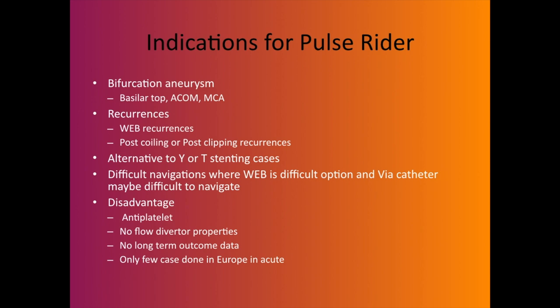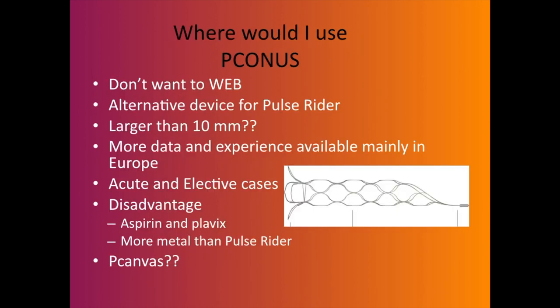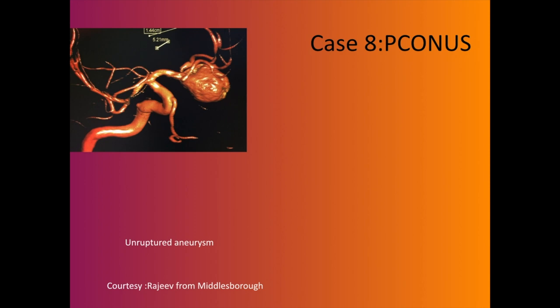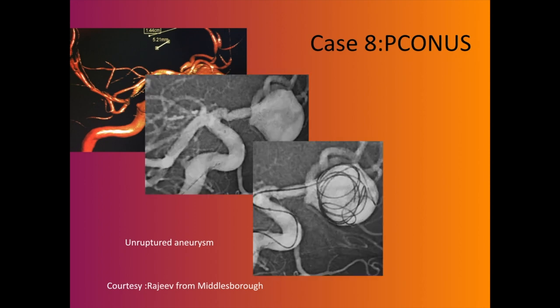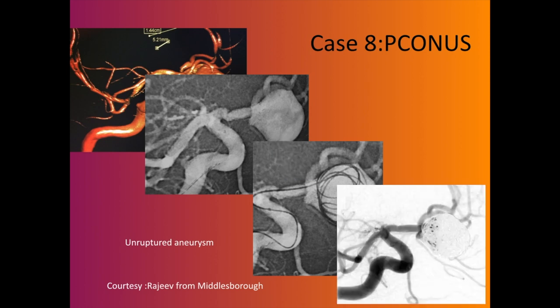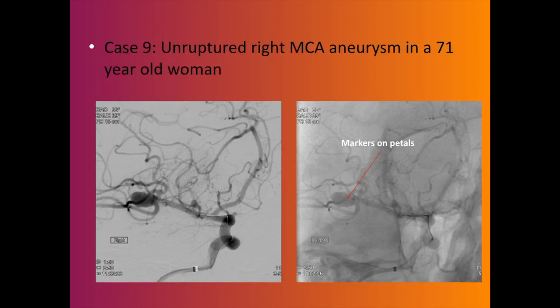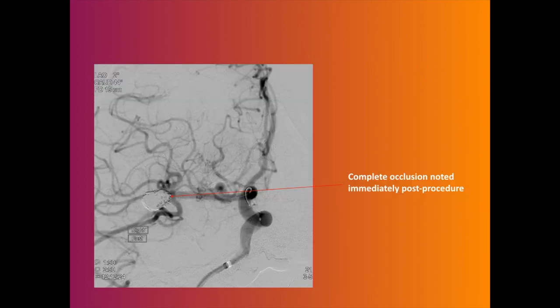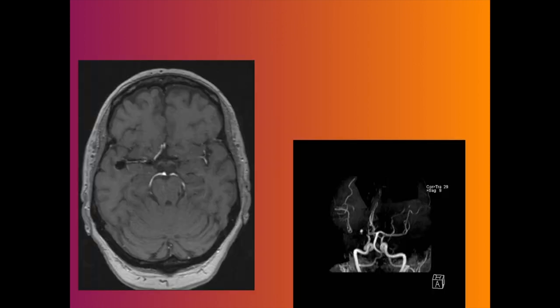What about the pCONus? When you don't want to WEB or use PulseRider, pCONus is another option — but a disadvantage is you still have to give antiplatelets. For a wide neck MCA aneurysm, you drop the device into the neck and coil the aneurysm — the result looks perfect. Another MCA case: drop the device, coil the aneurysm, a good follow-up. Data shows it's very safe but adequate occlusion rates are still around 80 percent.